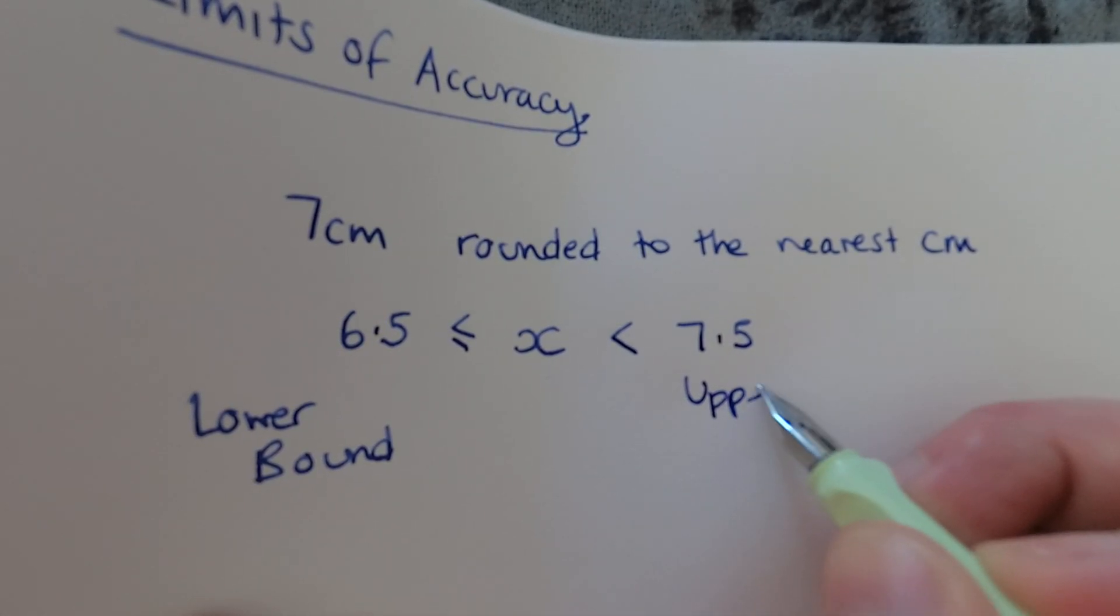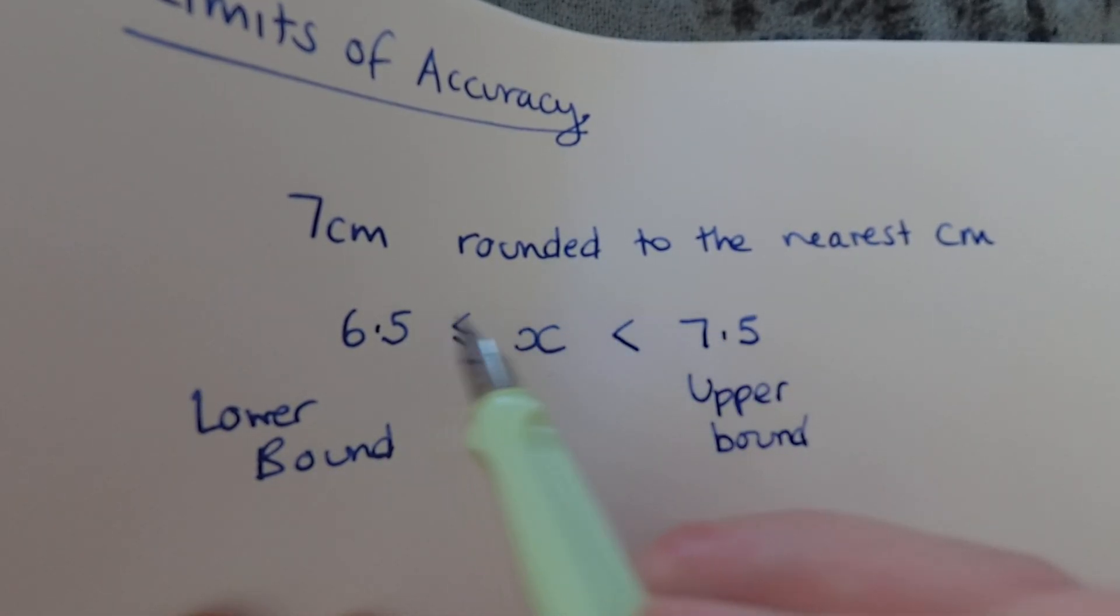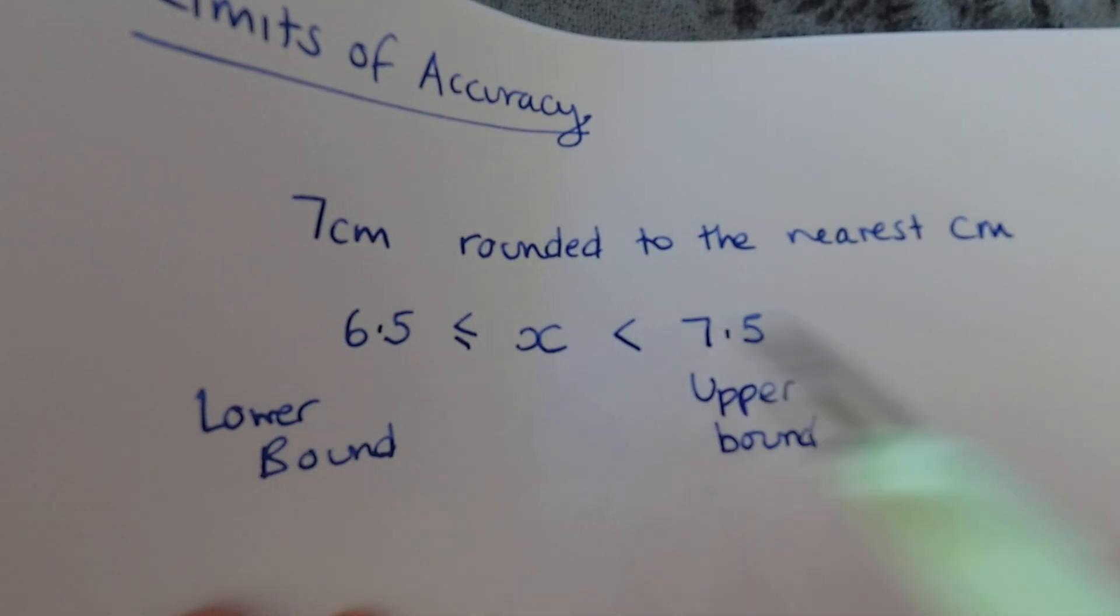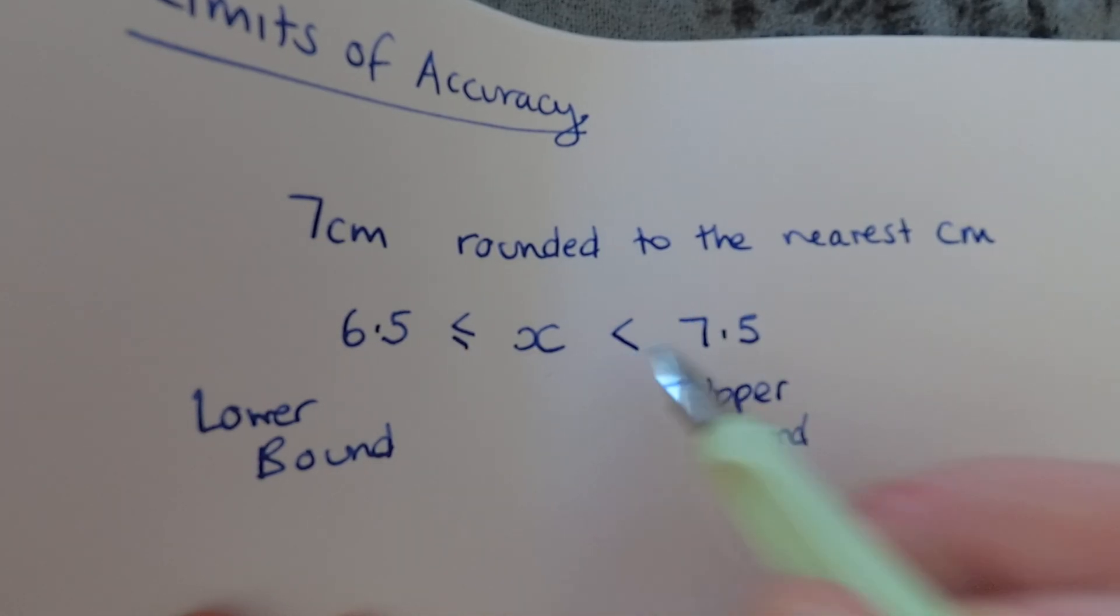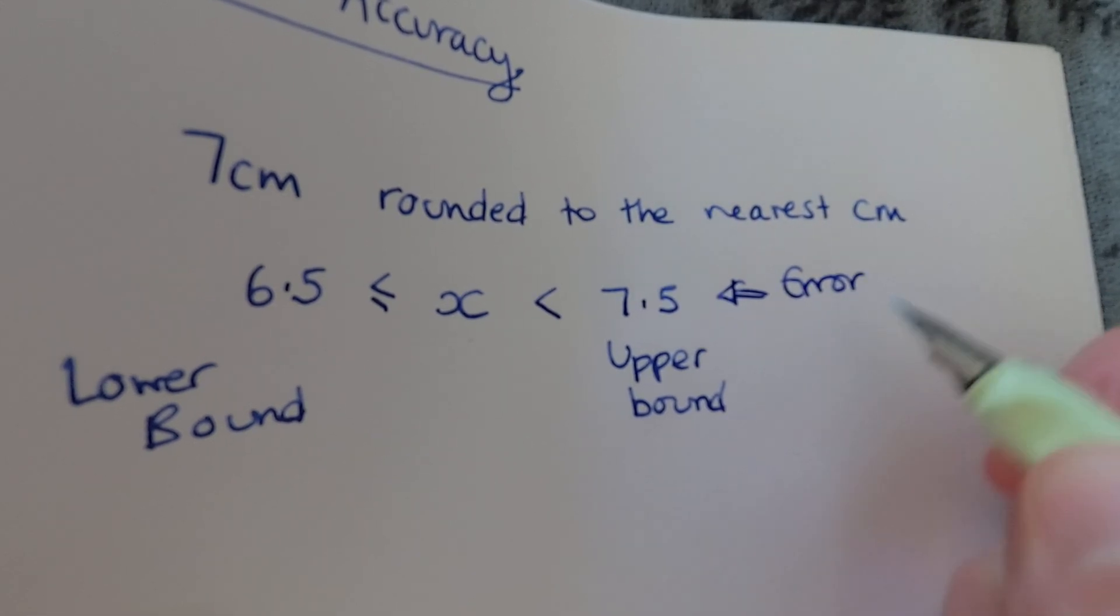So that's your upper bound, but when we're writing our error interval, which is what this is with our inequalities, we make sure this one doesn't have an equal sign on it because we're saying it can't be 7.5 but it can be anything less than that, even if it's 7.499999999. So this is your lower bound, this is your upper bound, this one always has an equals, this one never does, and this is your error interval.